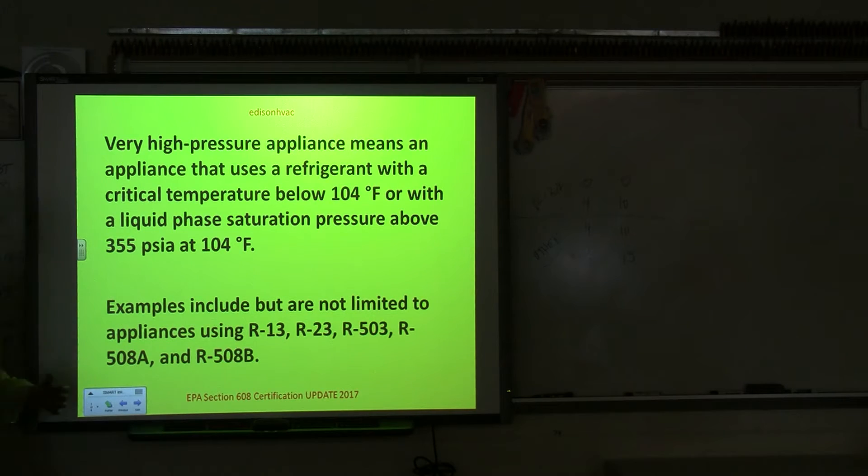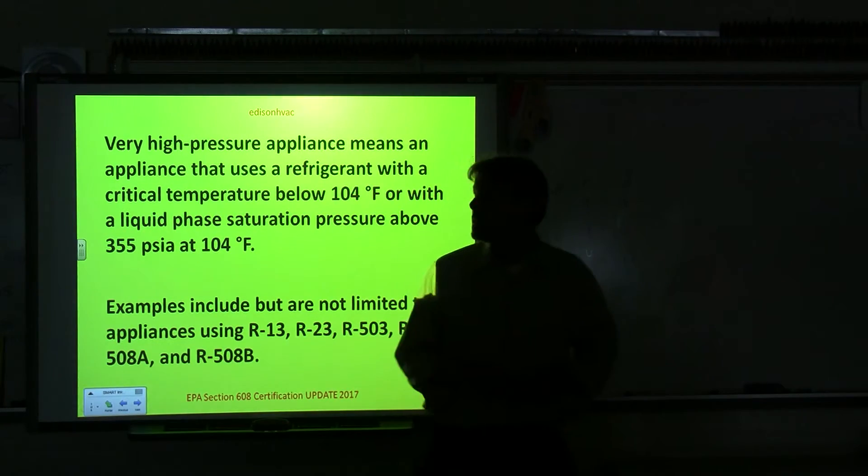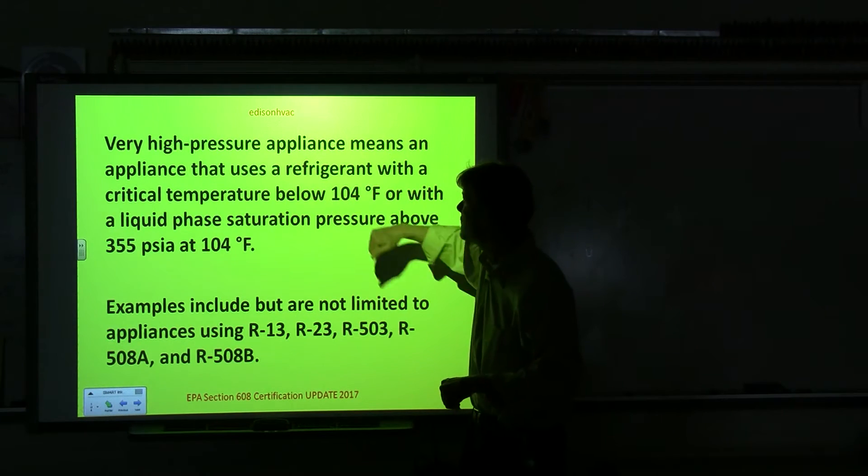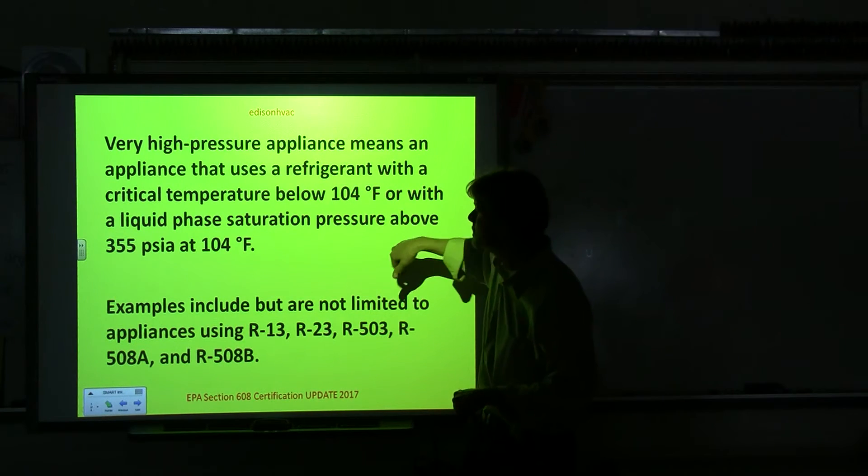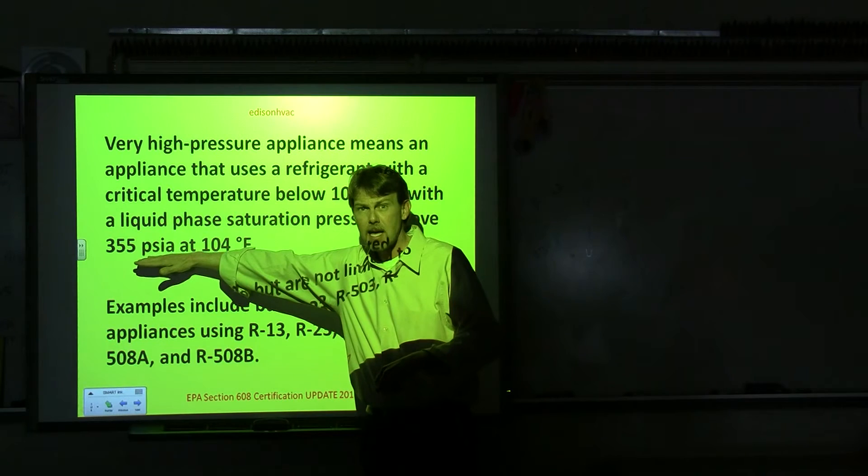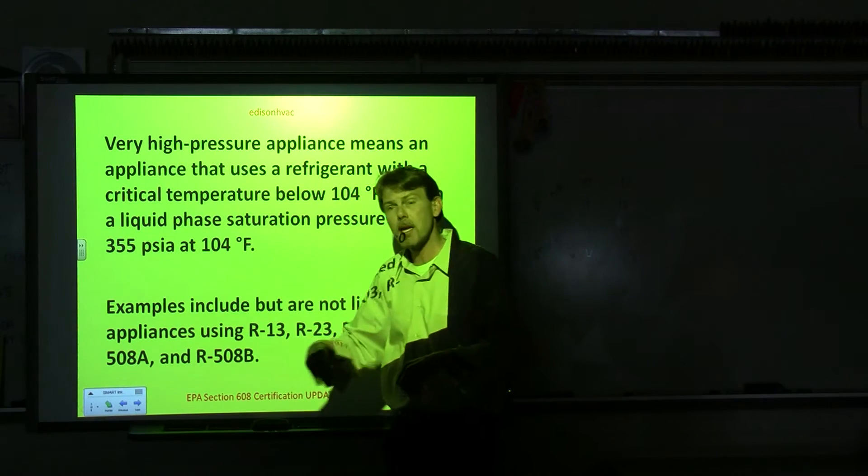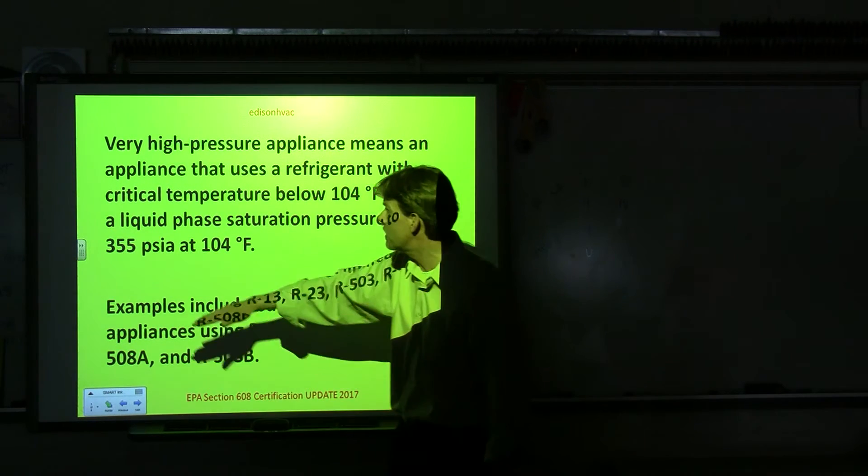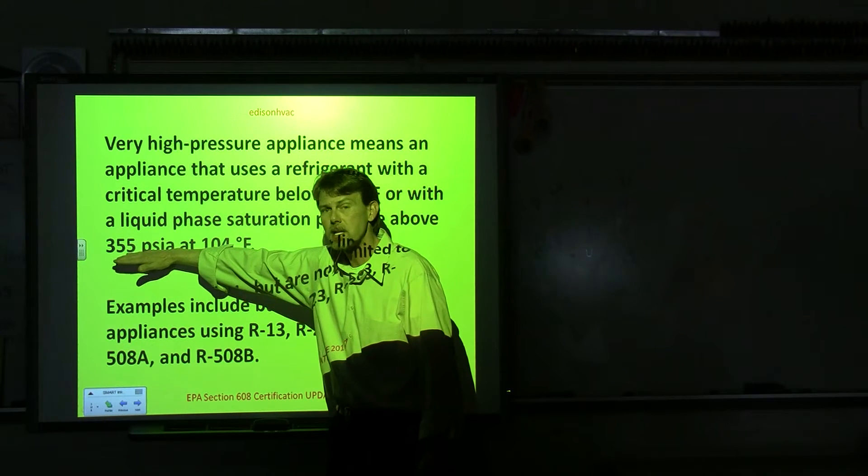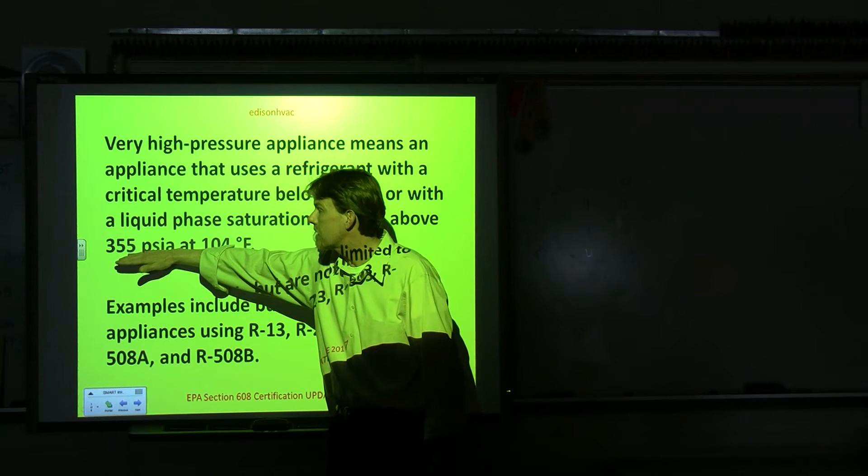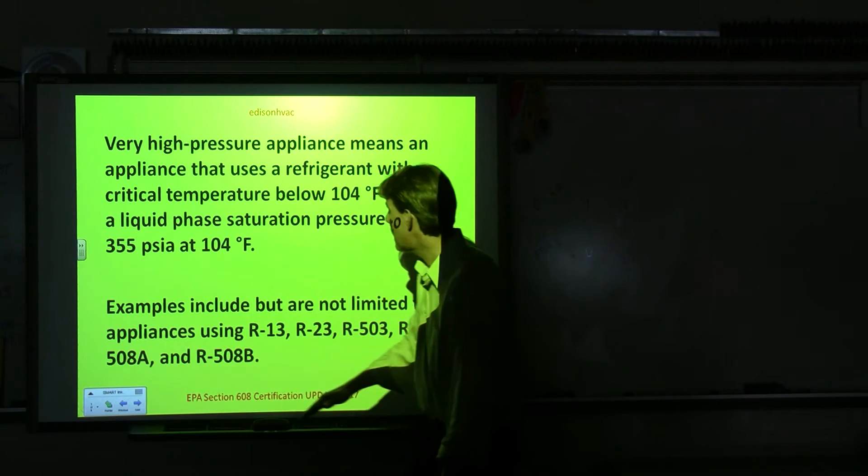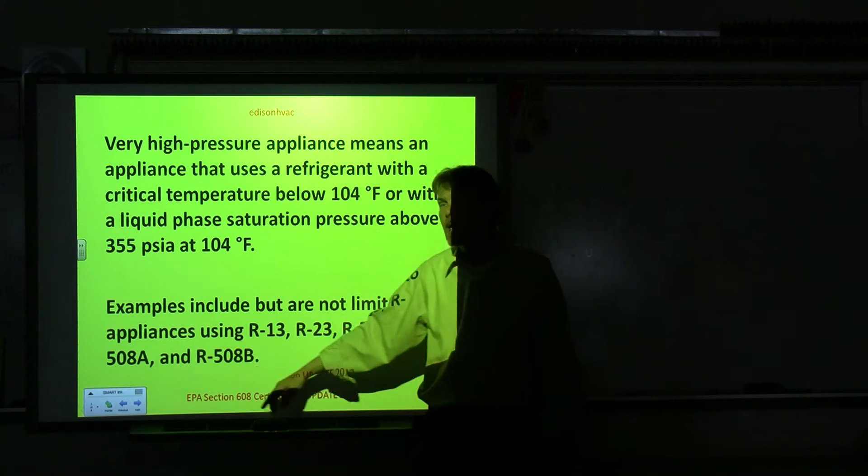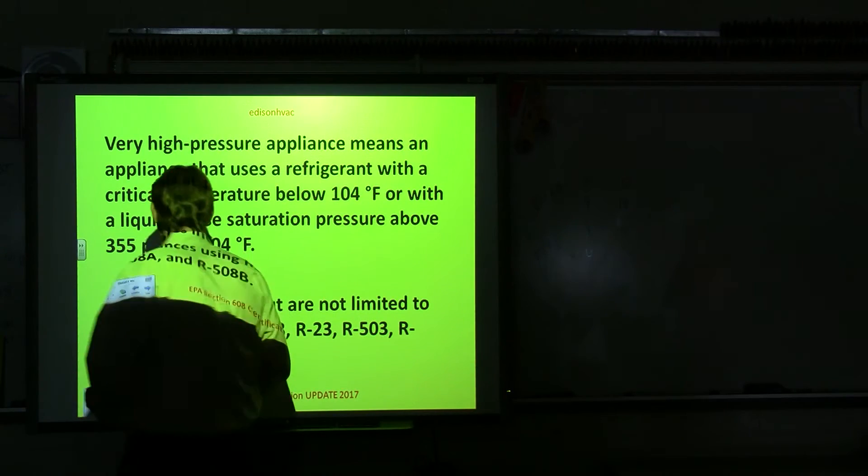Also, just want to go over what the definition of the appliances are. So a very high pressure appliance means that it has a refrigerant with a critical temperature below 104 degrees Fahrenheit and it's got a saturation pressure above 355 PSIA. So that means they've added, remember, your gauge pressure is what you're reading on the gauge and to find absolute pressure, you need to add 14.7 to that. So if I want to know what this is on gauge pressure, I would minus 14.7 or about 15 to make it easy math and that's 340 PSIG. So what type of refrigerants does this include? R13, R23, 503, 508A and 508B. Those are refrigerants for very high pressure appliances.